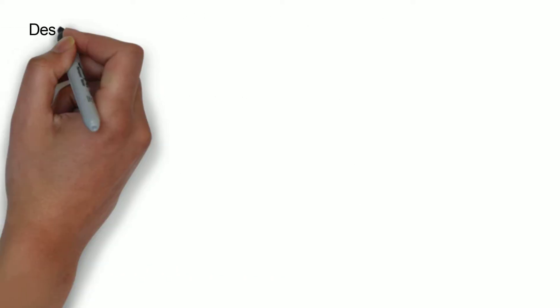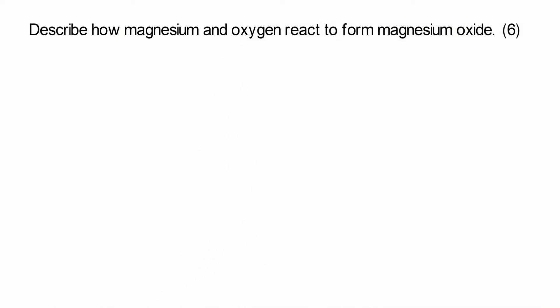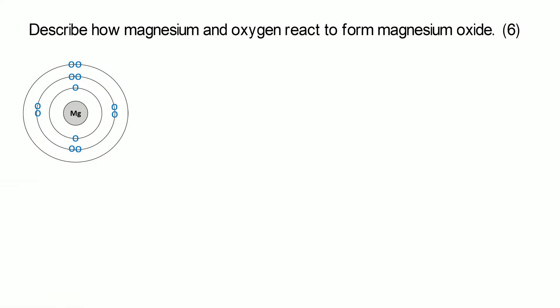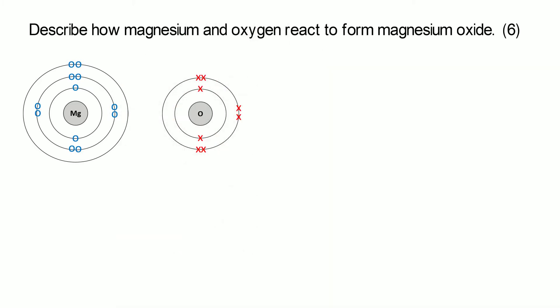Now we're going to think about magnesium oxide — magnesium and oxygen. This one's slightly different because magnesium isn't in group one, it's in group two, so it has two electrons in its outer shell which it wants to lose. Oxygen is in group six, so it has six electrons in its outer shell and it would like to gain two more.